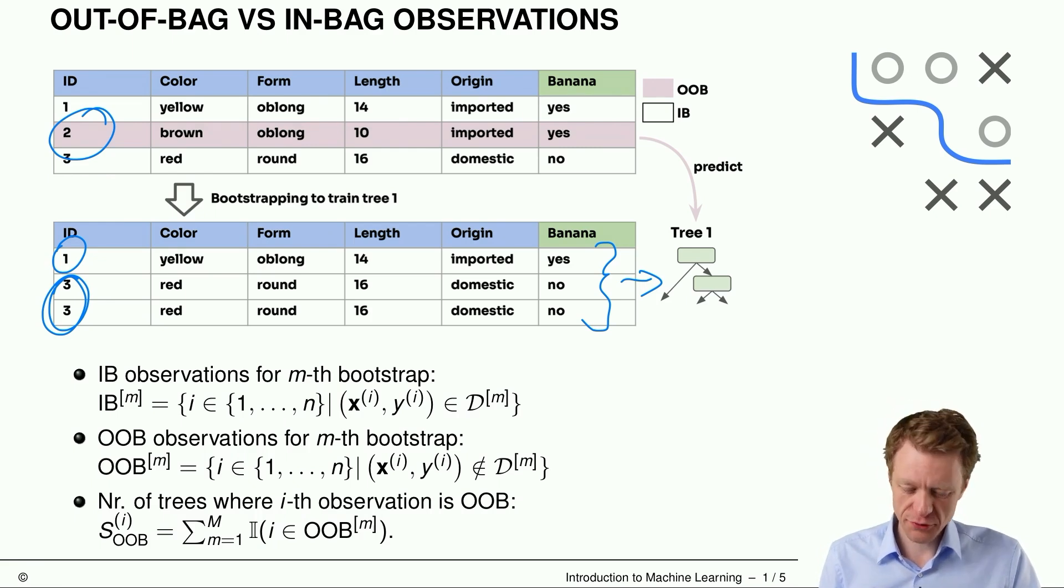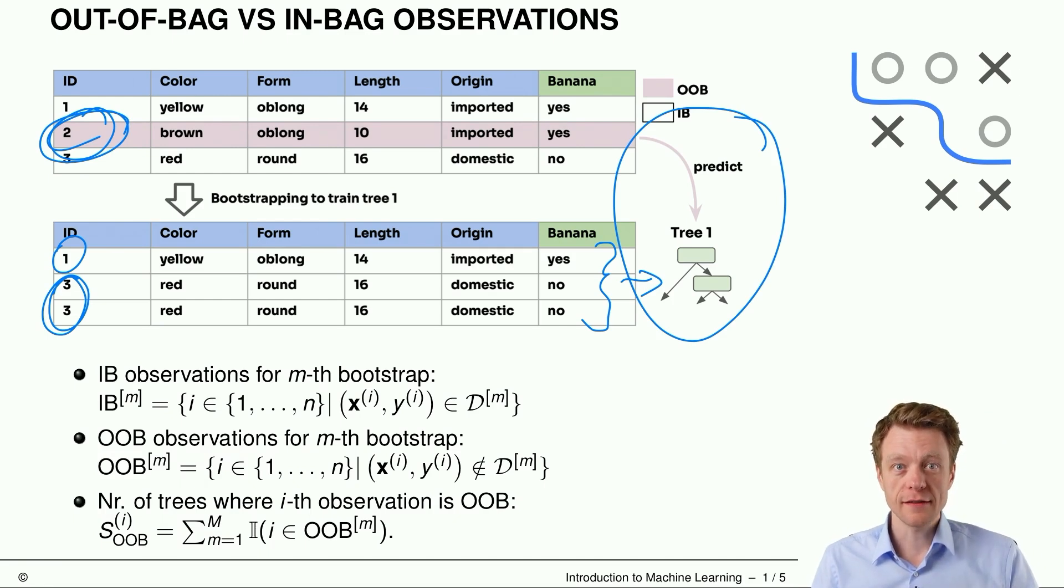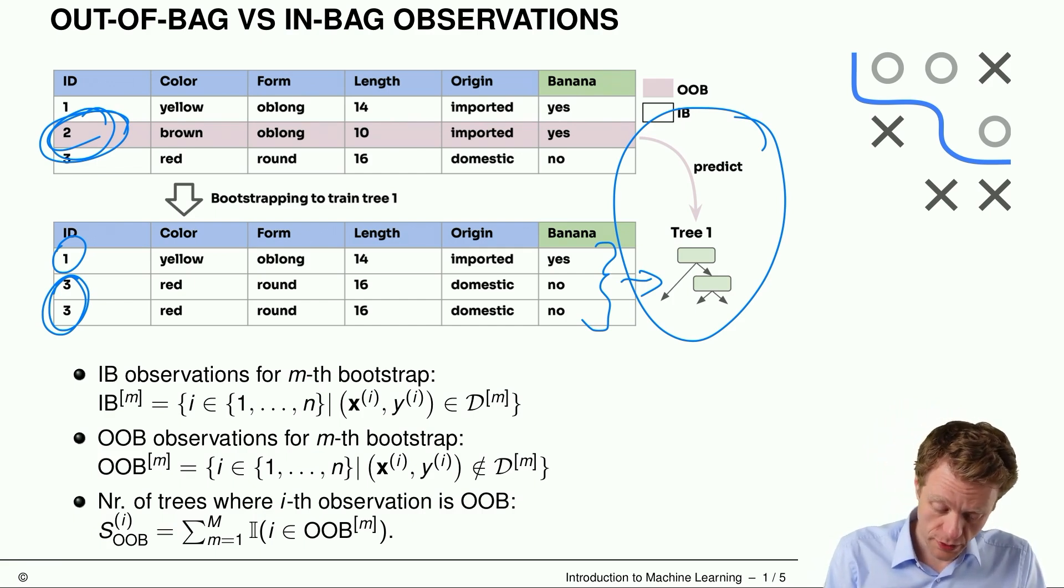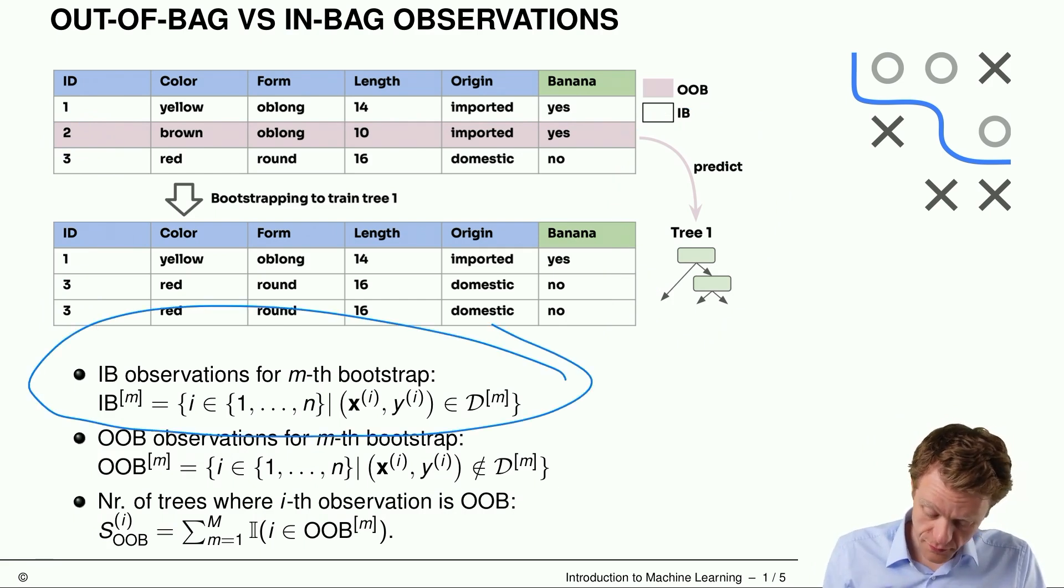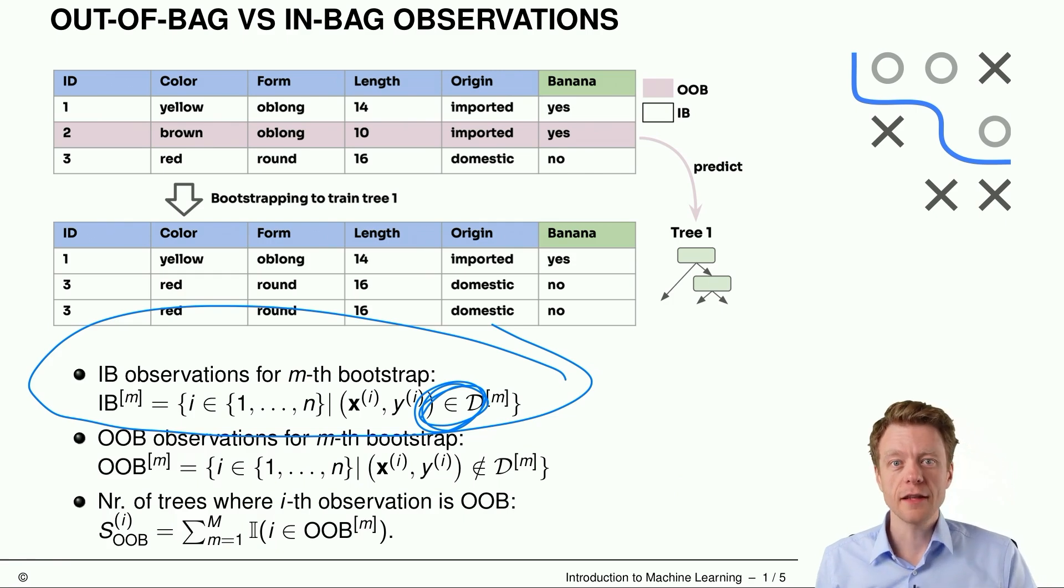We have the first observation and we duplicate the third observation. We just have observations one and three in the Bootstrap sample, but three two times. And then later we use this dataset to train a model, could be a tree, for random forests it will be a tree of course. And then later we can use the observation that we did not use for training the tree, so the second observation, to predict its target variable with this trained tree. Perhaps you stop the video and try to figure it out yourself before I write it down.